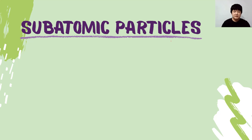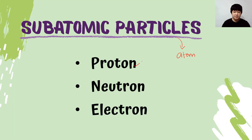Subatomic particles are those particles that make up atoms. We have 3 subatomic particles — they are proton, neutron and electron. In other words, in an atom, we have proton, neutron and electron.